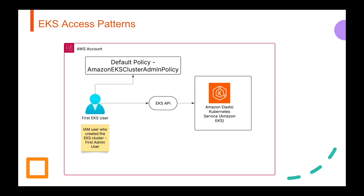Before we get into the configurations, let's first understand how EKS access works. When you create an EKS cluster, only the user who created it has admin access by default. The IAM user who created the EKS cluster has the default policy which is Amazon EKS cluster admin policy, and they can access the EKS cluster using the console and CLI as well. Other IAM users can only see that there is an EKS cluster through the AWS console but won't be able to access any resources or pod configurations.